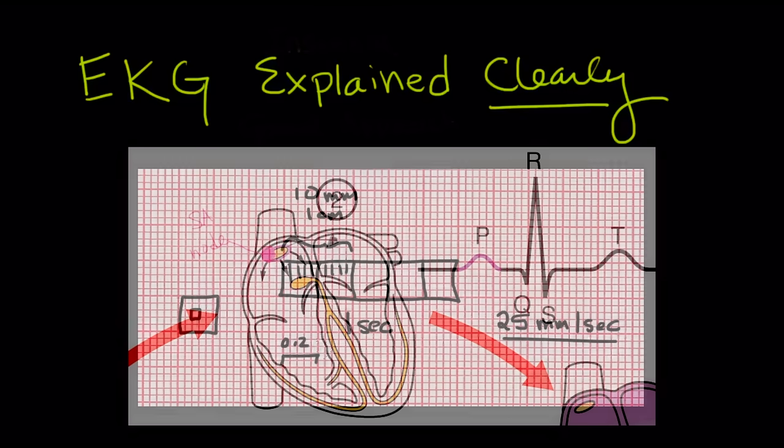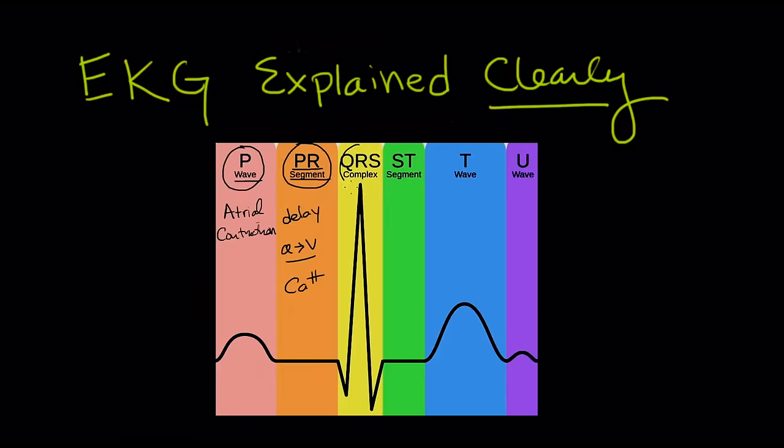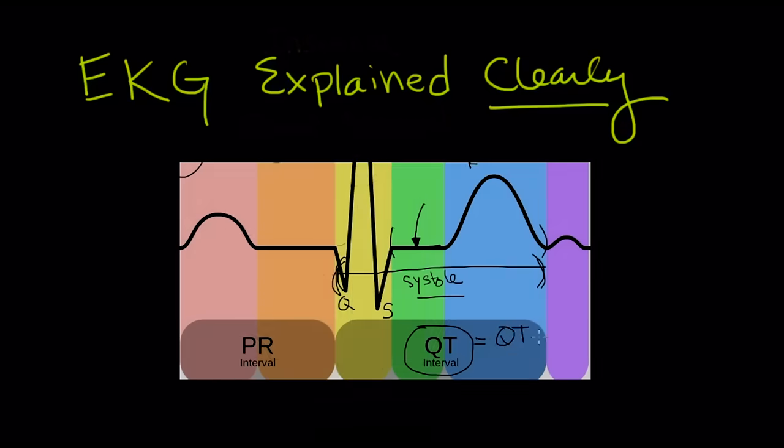Next are specifics on EKG tracing: the P wave, the QRS complexes, the QT interval, the R to R interval, etc.